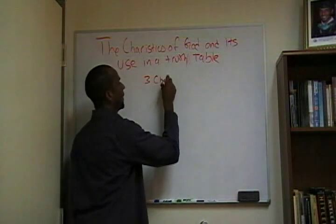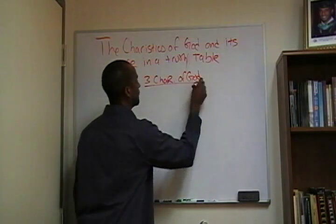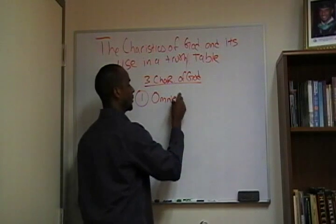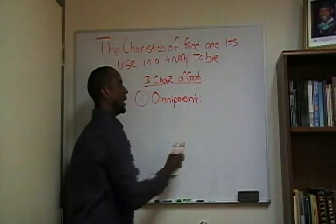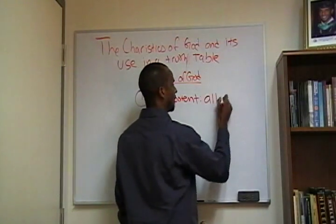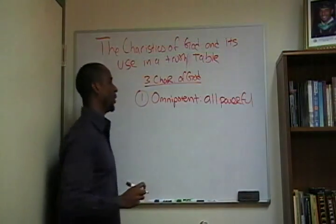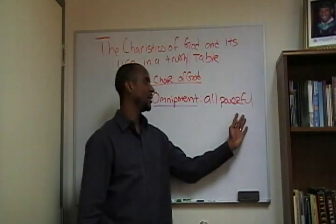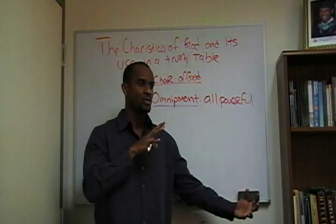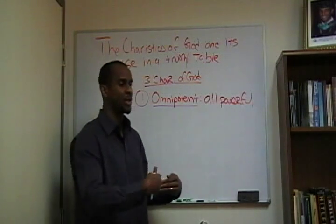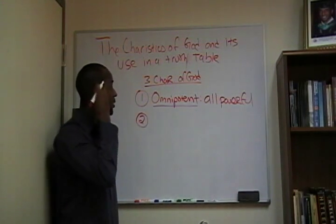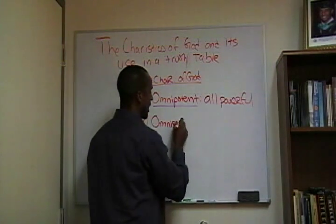The first characteristic that God is said to have is that God is omnipotent — all-powerful. God has the power to create or destroy anything, bring things into existence out of nothing, and so on. The second characteristic is omniscience — O-M-N-I-S-C-I-E-N-C-E — omniscience.